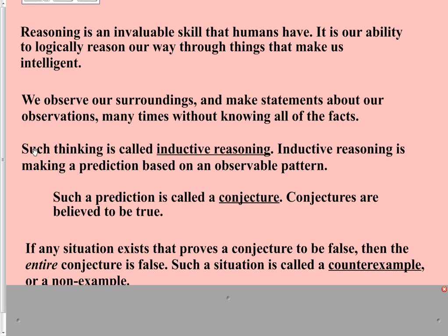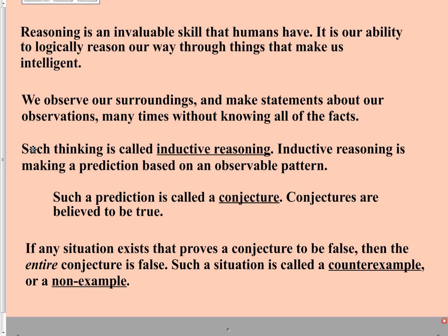Then we got into discussions of reasoning, which was tough for some students. We had two different types. First, inductive reasoning — making predictions based upon observable patterns. Most of our rules and theorems in geometry are based on inductive reasoning: they noticed that every single time you had a right triangle, leg squared plus the other leg squared always equaled the hypotenuse squared. The pattern was noticed, and a theorem was written. These predictions or theorems are called conjectures, which are supposed to be true. If you can find any reason why your conjecture would be false, you have discovered a counterexample, and the conjecture should be discarded.